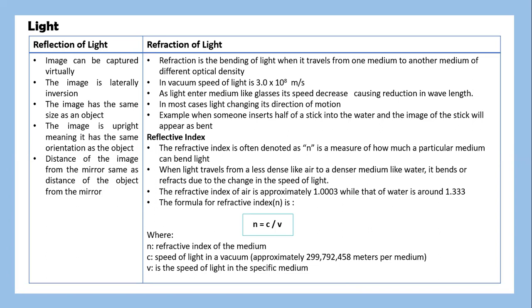The formula for refractive index is n equals C divided by V, where n is the refractive index of the medium, C is the speed of light in a vacuum, approximately 299,792,458 meters per second, and V is the speed of light in the specific medium.